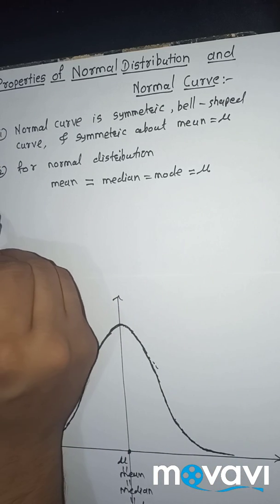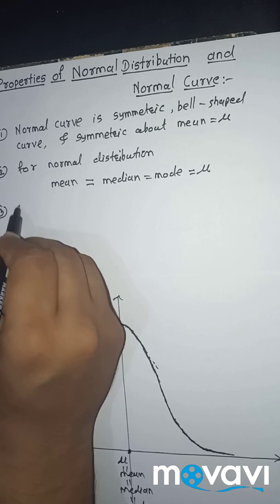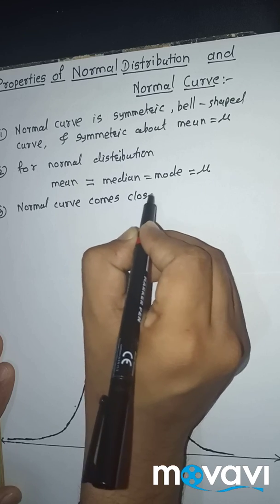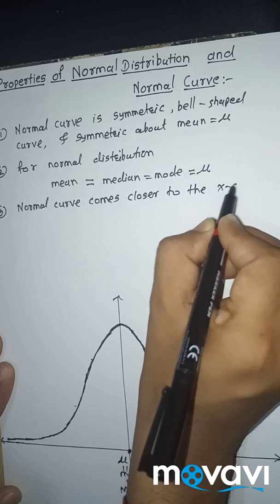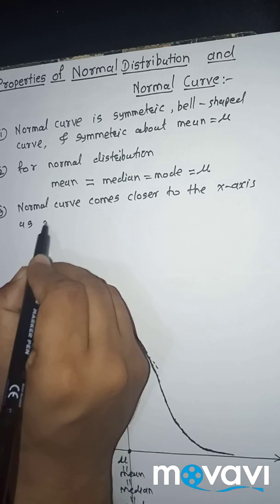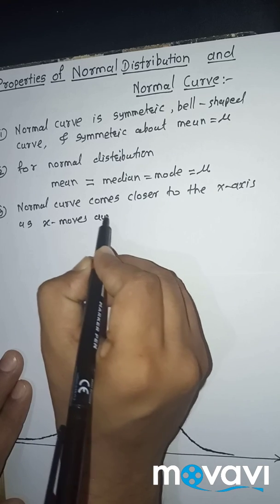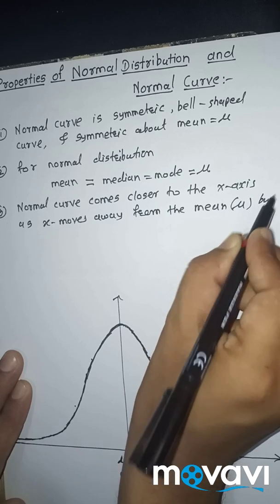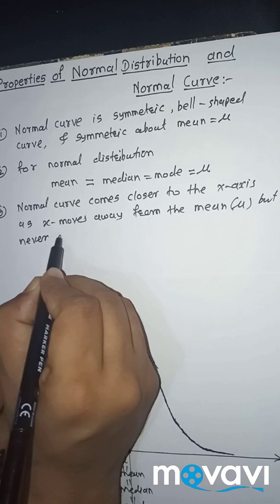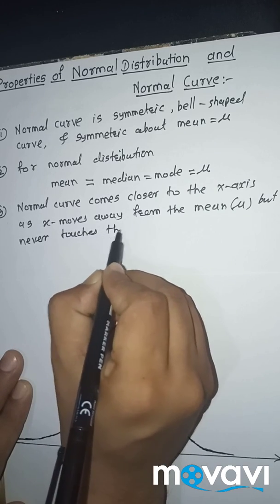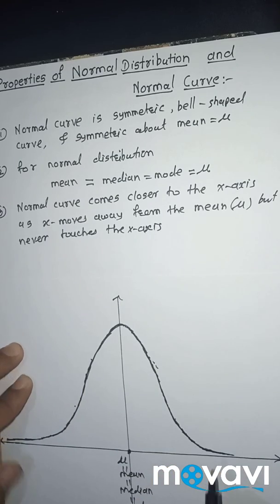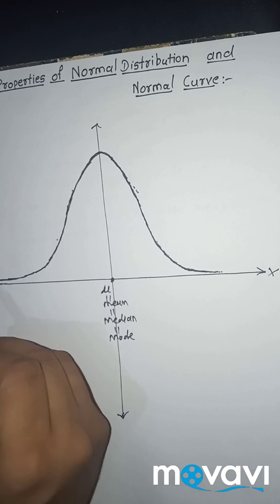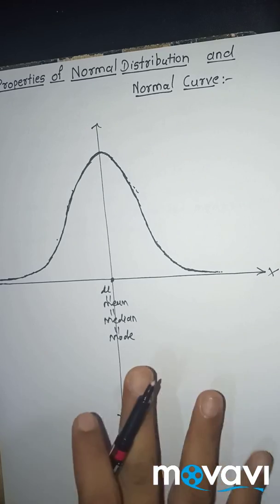Third property: the normal curve comes closer and closer to the x-axis as x moves away from the mean, but never touches the x-axis. See here — this curve comes closer to the x-axis in both directions but never touches it. This is our third property.